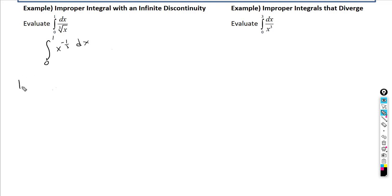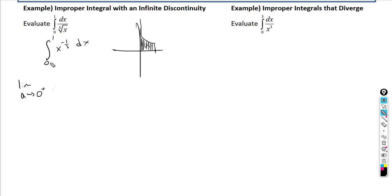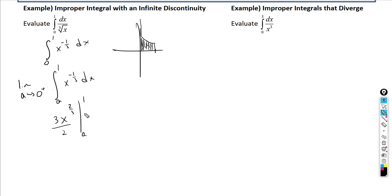Because of the vertical asymptote at x = 0, we rewrite the integral as the limit as a approaches 0 from the right of the integral from a to 1 of x to the negative 1/3 dx. Now we integrate normally — adding 1 to the exponent gives 2/3, and dividing by 2/3 gives a factor of 3/2.